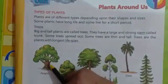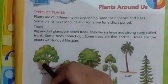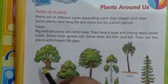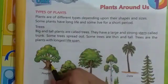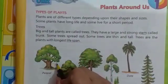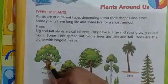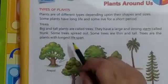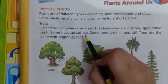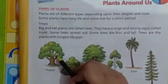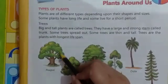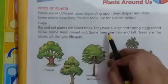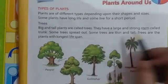Let's see — this is a tree. This is its stem. It is big and strong. Some trees spread out, while some trees are thin and tall.